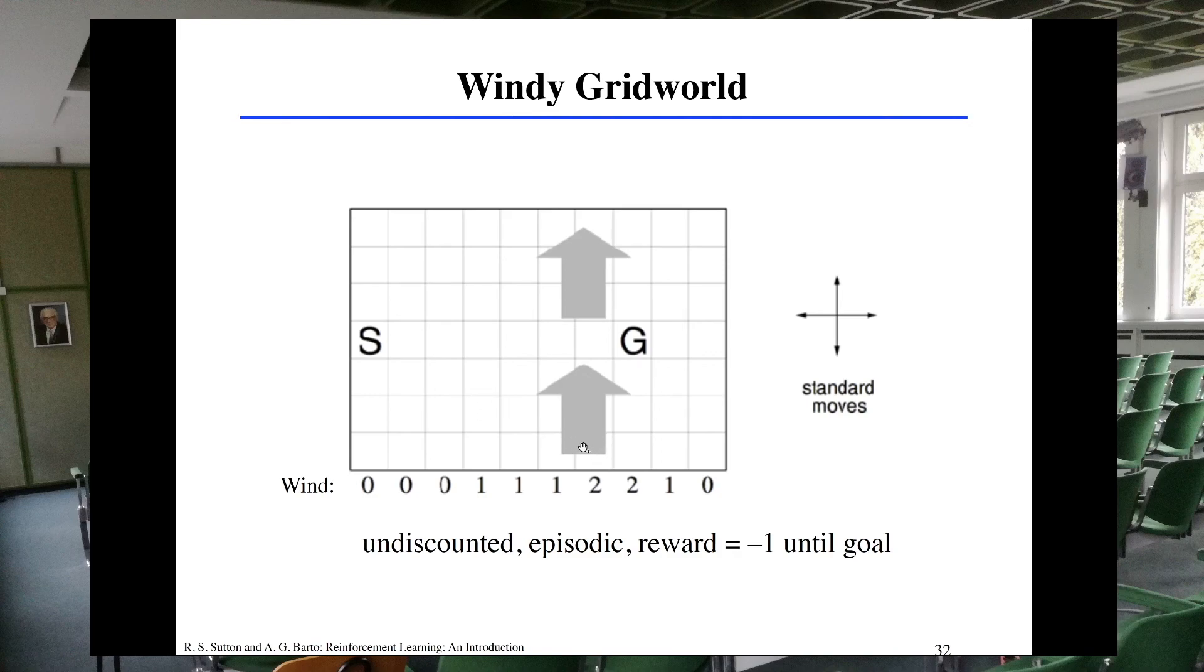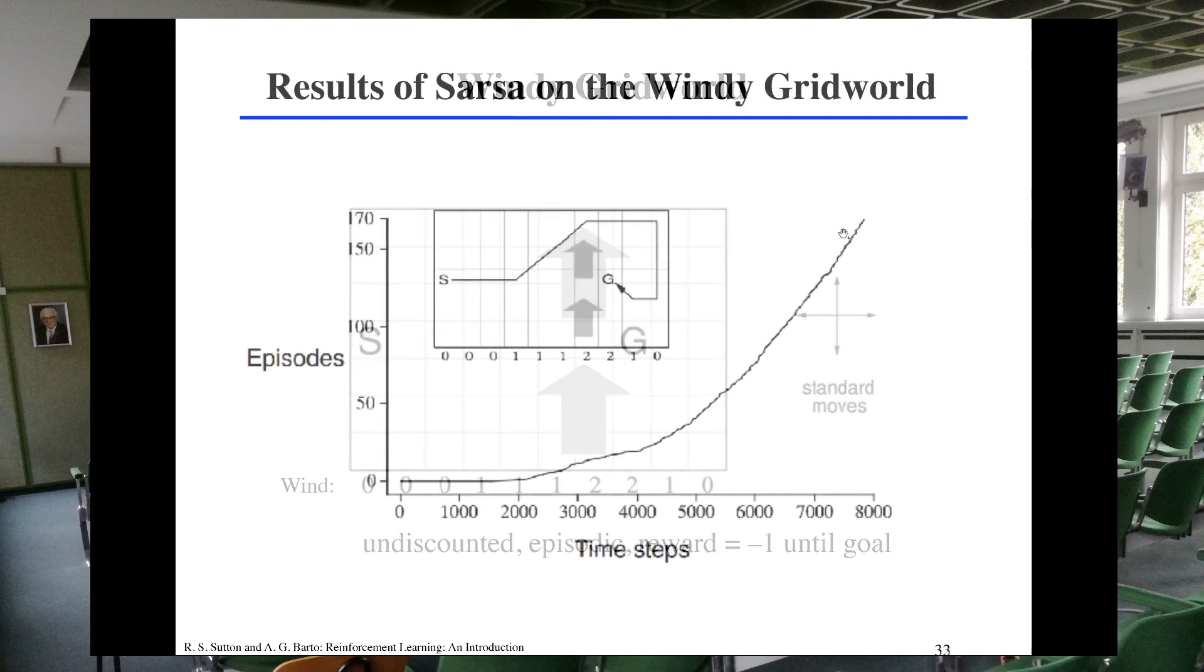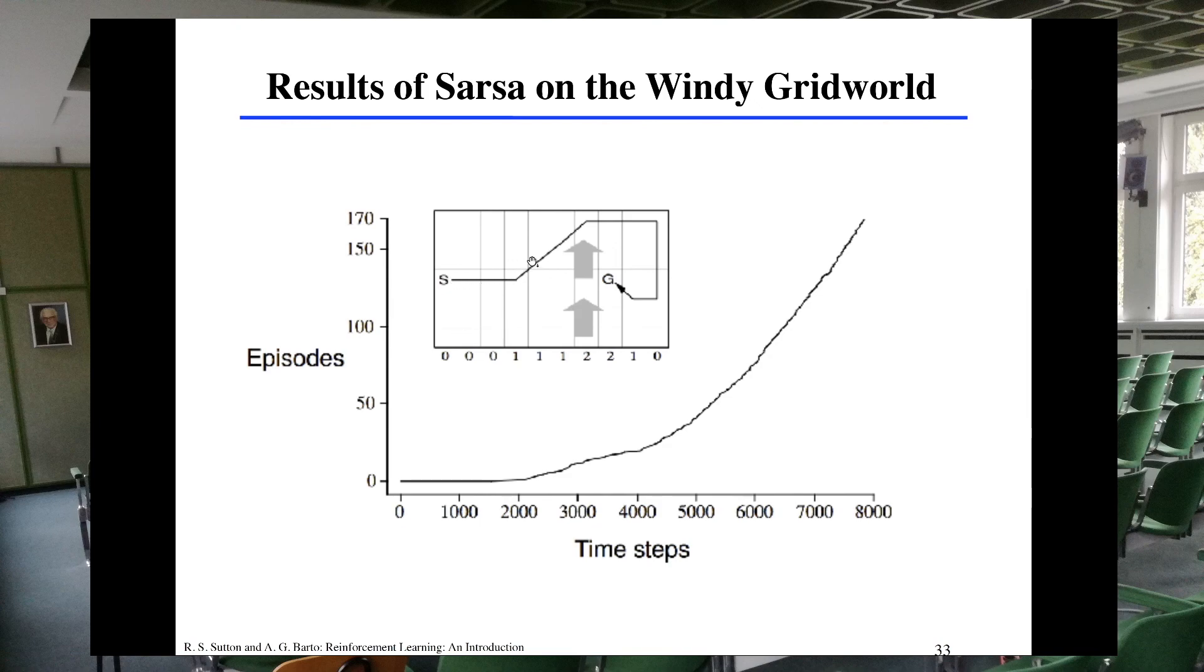In this column, for example, if you move from here to here, you will end up one, two squares up. So this is called the windy grid world. For example, in the case of SARSA, you will get this solution here. So SARSA learns how you need to move in order to get to the goal.